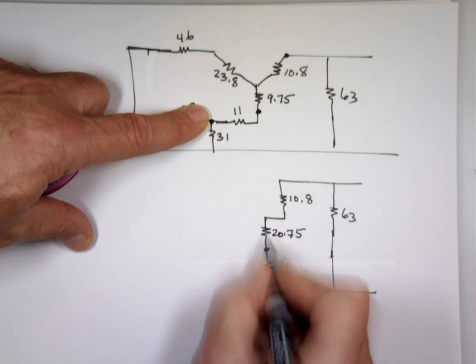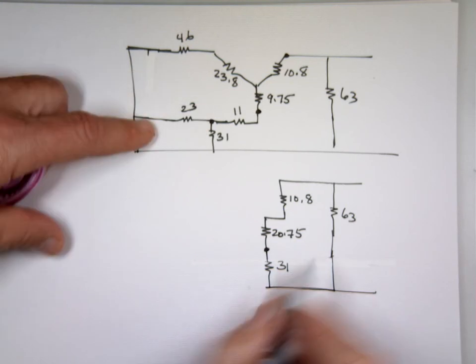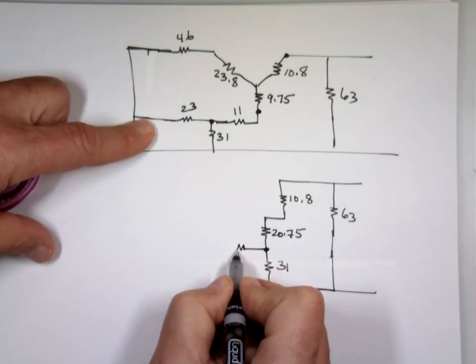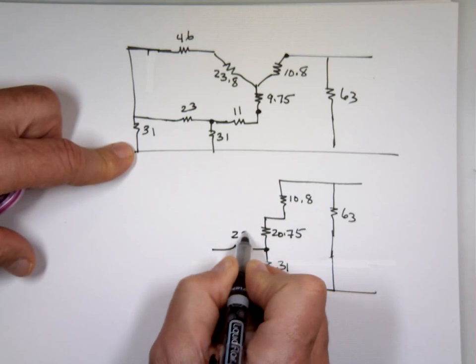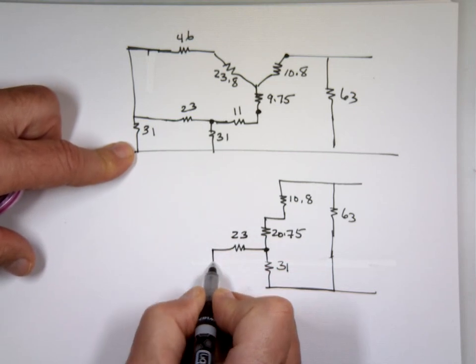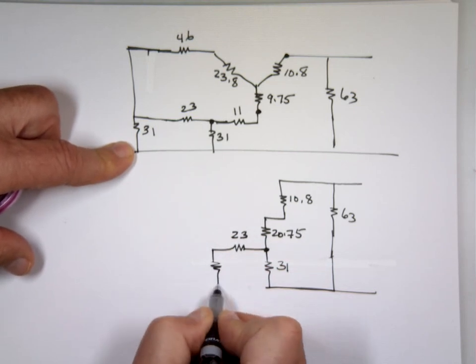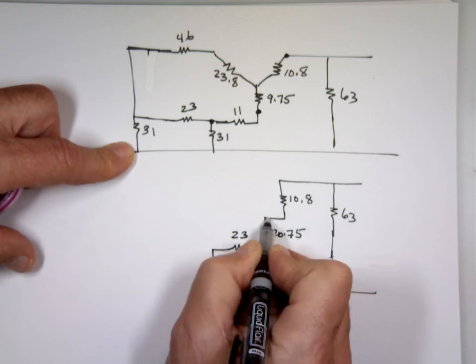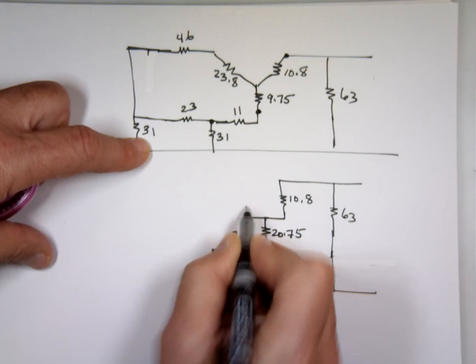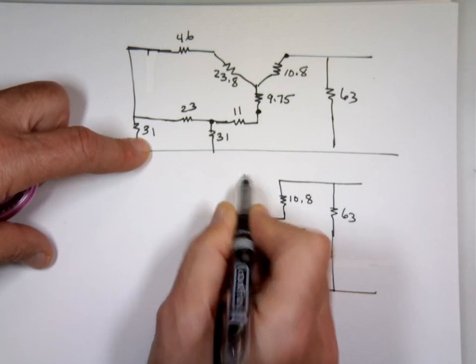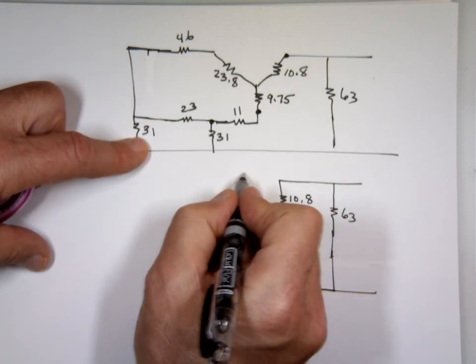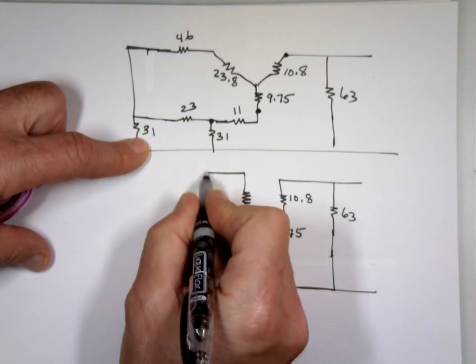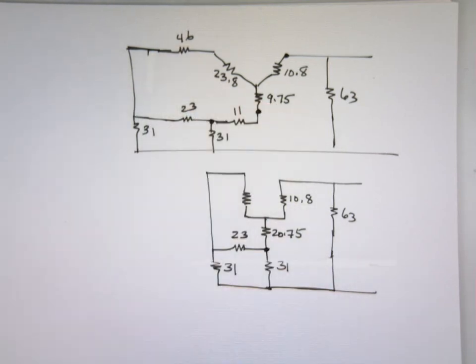Now I got what? The 31. And right now it looks like I can add these two, but wait a minute. I'm not done. 23, 31. And this one, I can add these two together. What's this plus that? 69.8.